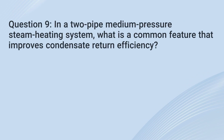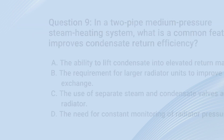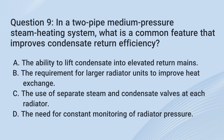Question 9. In a two-pipe medium-pressure steam heating system, what is a common feature that improves condensate return efficiency? A. The ability to lift condensate into elevated return mains. B. The requirement for larger radiator units to improve heat exchange. C. The use of separate steam and condensate valves at each radiator. D. The need for constant monitoring of radiator pressure.